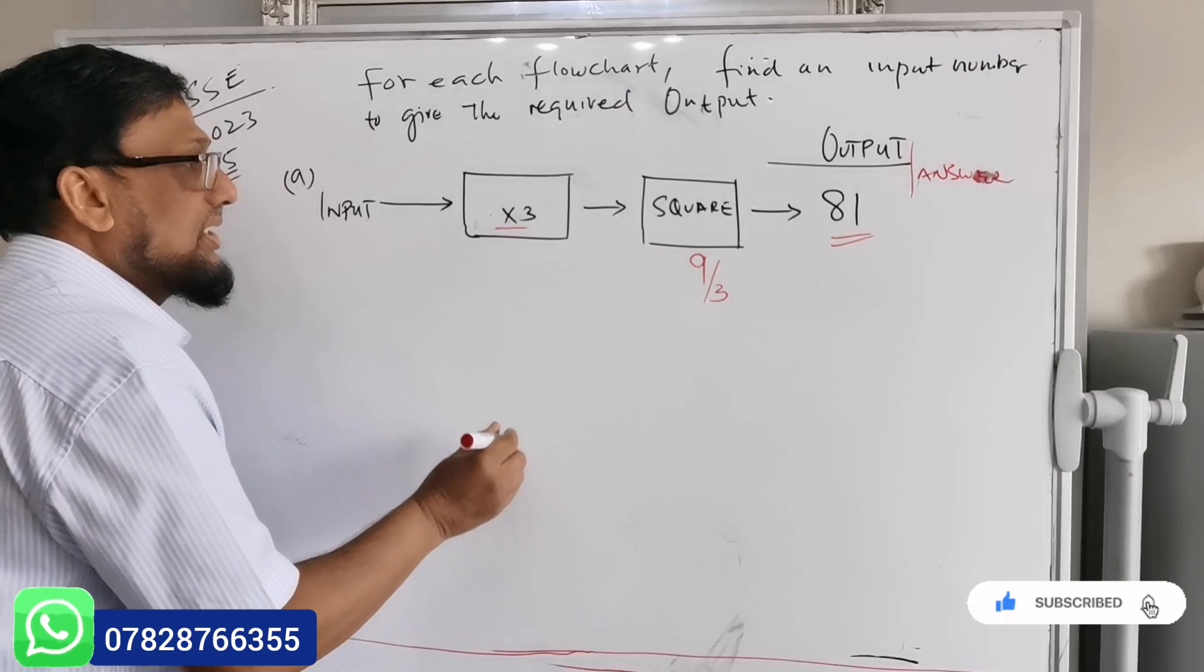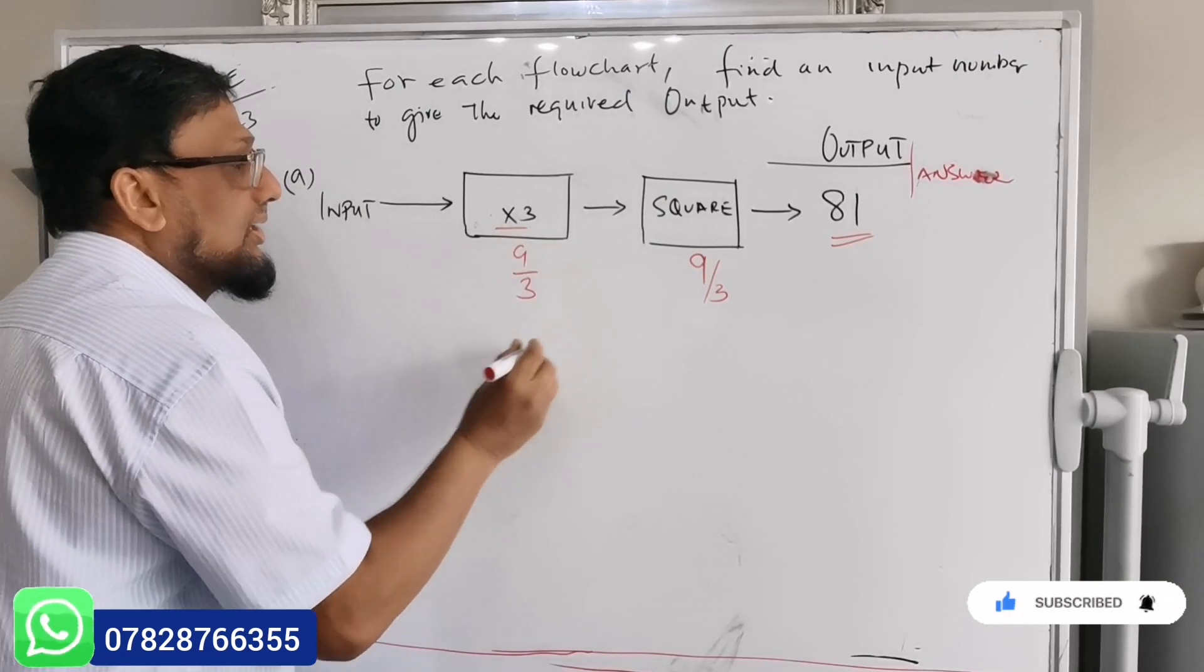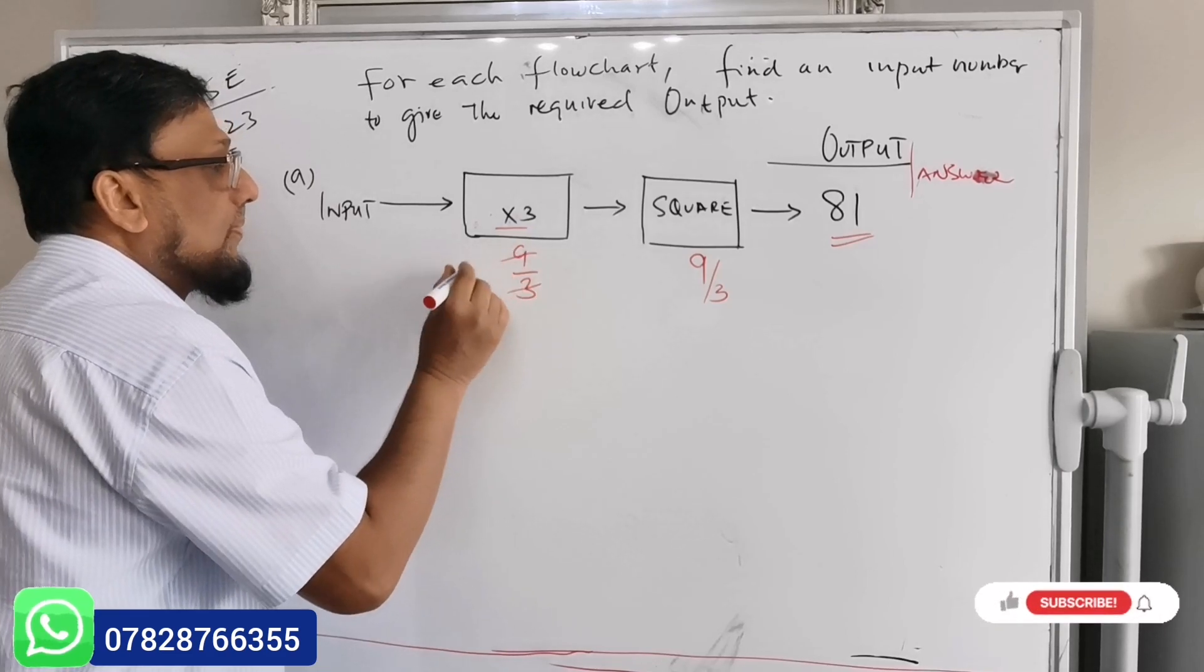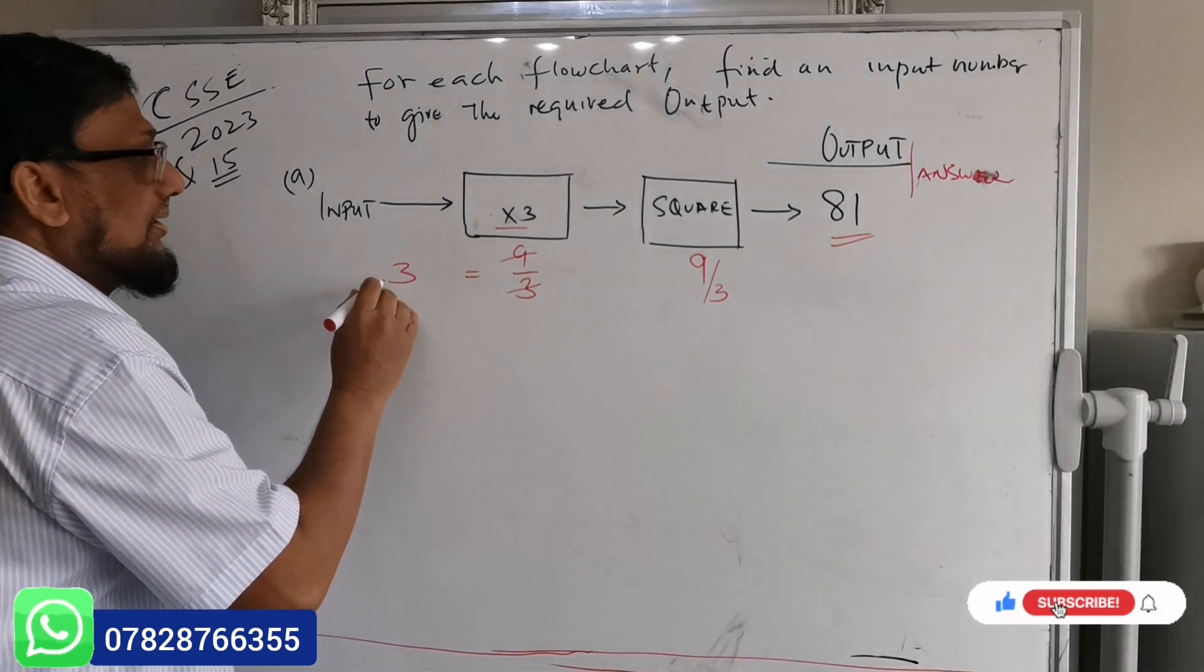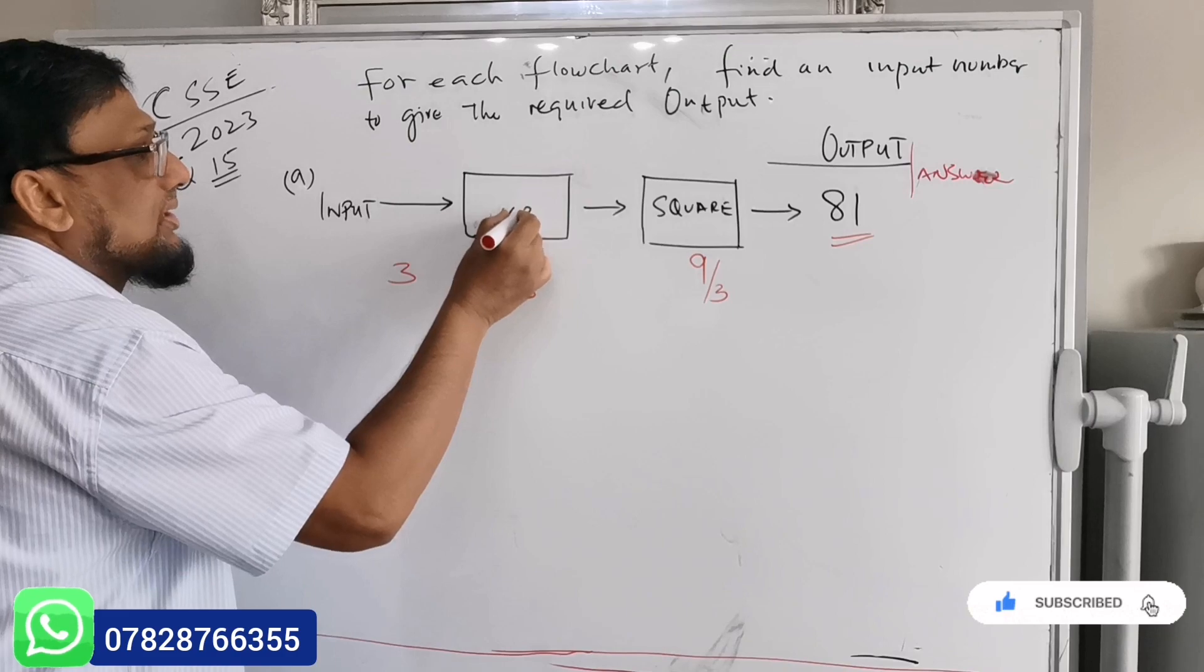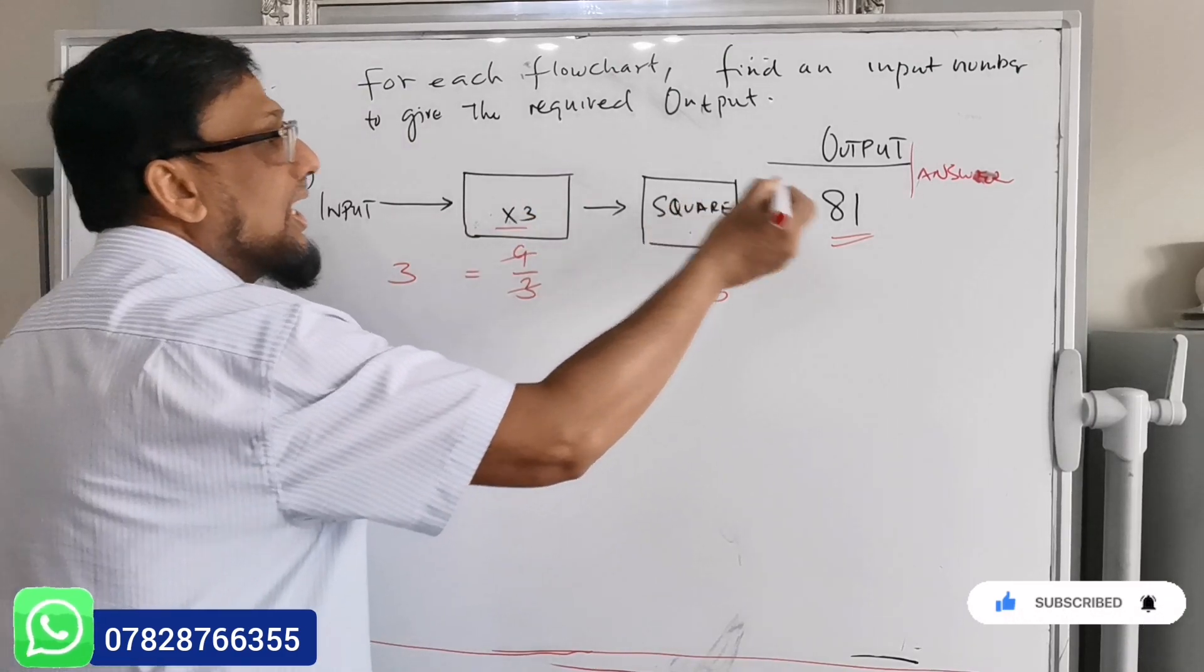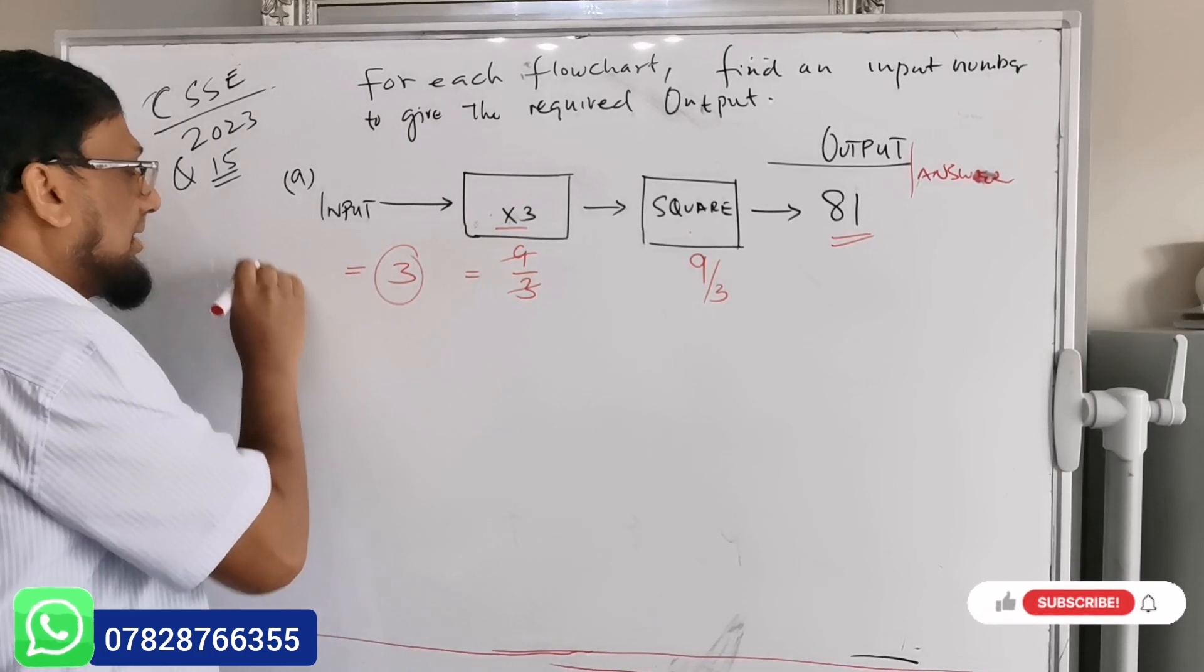And it says times by 3, so whenever the backward calculation, whenever it's times, you always divide by 3. So 9 divided by 3 which is equal to 3. So we can verify as well, if we put 3 in this box, 3 times 3 is 9 and 9 squared is 81, so the input value will be 3.